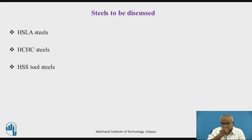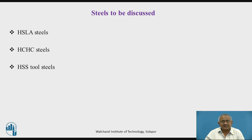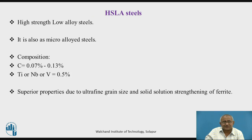We are going to discuss HSLA steel, HCSC steel, and HSS tool steel. These are the three special varieties of steels, and out of these three, HCSC steel and HSS steels are called tool steels, while HSLA steel is a little different. So we will begin with the study of HSLA steel.